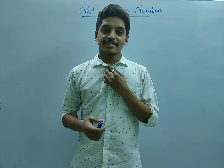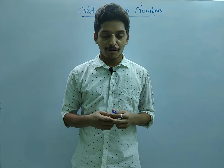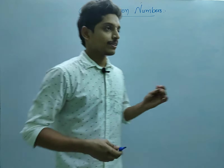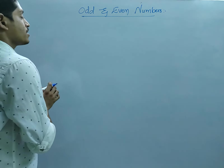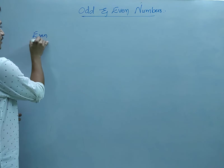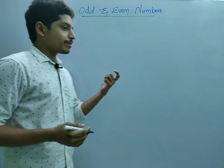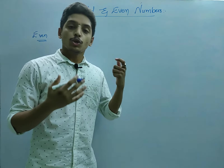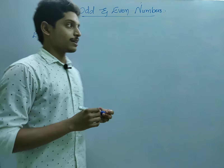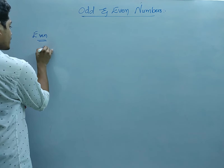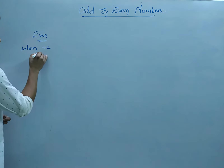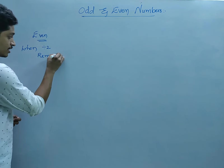Okay friends, now let us discuss another important concept: even numbers and odd numbers. So, when we consider even numbers, any number which is divisible by 2 is called an even number. When it is divided by 2, the remainder will become 0.